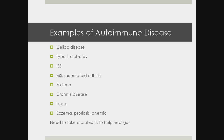Autoimmune disease is essentially your body attacking itself — it doesn't have immunity to fight invaders because it's fighting its own cells and tissues. Examples include celiac disease, type 1 diabetes, IBS, multiple sclerosis, rheumatoid arthritis, asthma, Crohn's disease, lupus, eczema, psoriasis, and anemia. Many of these are being traced to the gut. Research shows that people with autoimmune disease definitely need to take a probiotic to help balance gut bacteria.